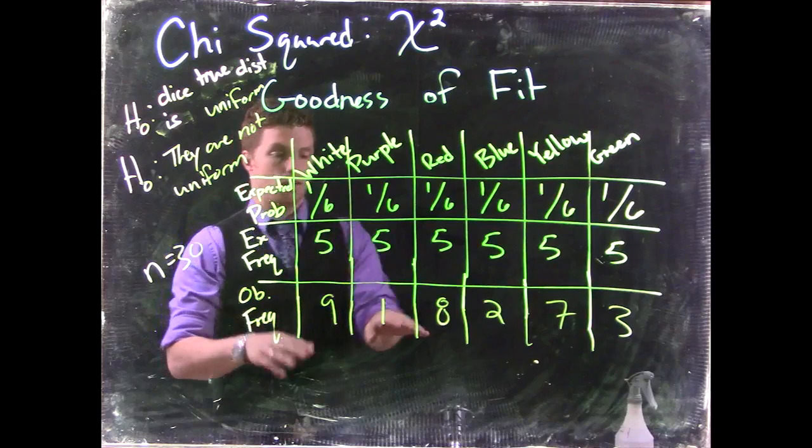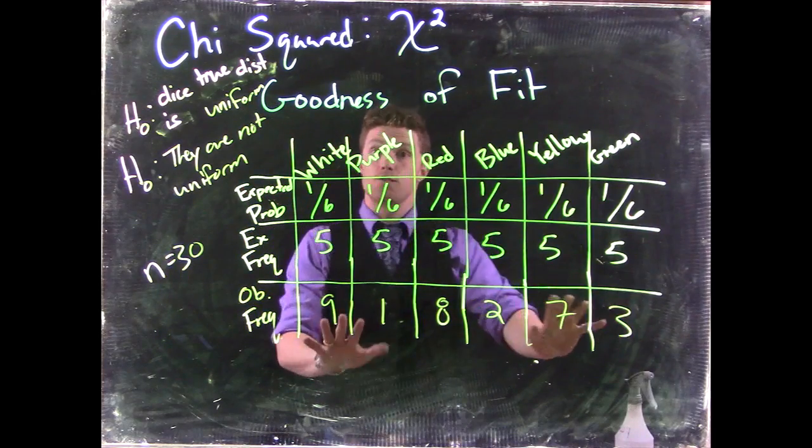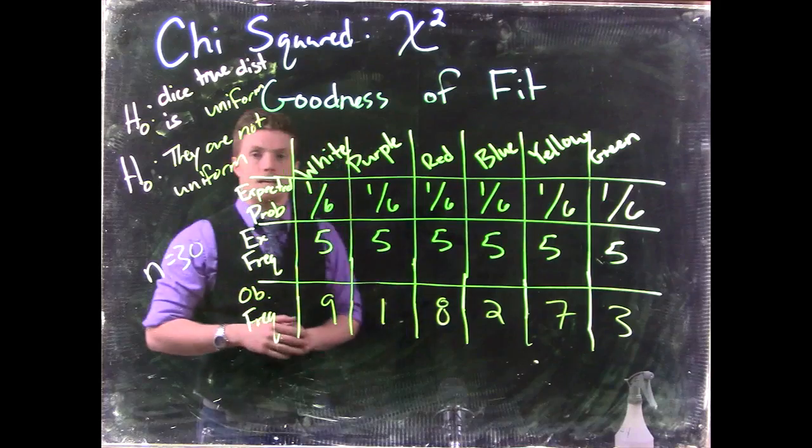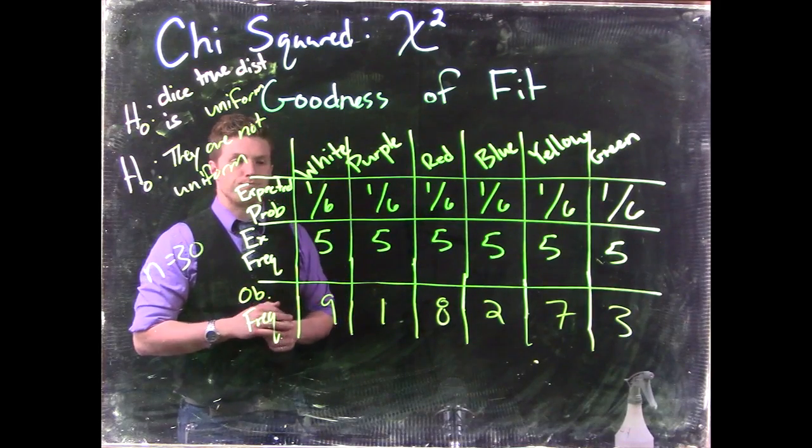Now, observe in my observed frequency how not all of these are equal to 5. That's fine, as long as the expected frequency is 5 across the board.